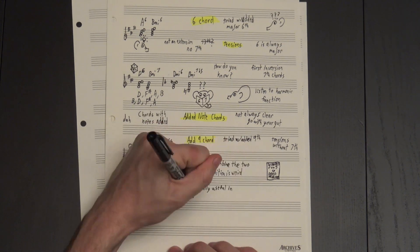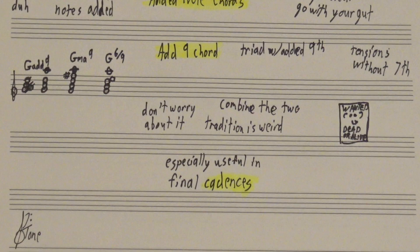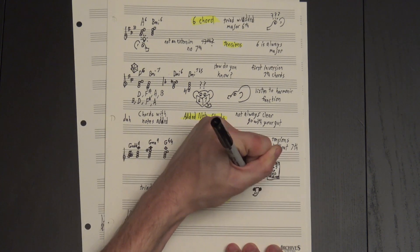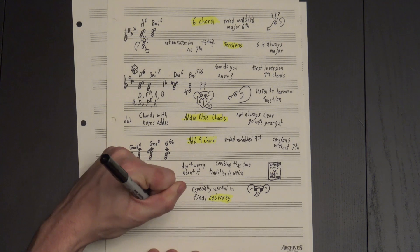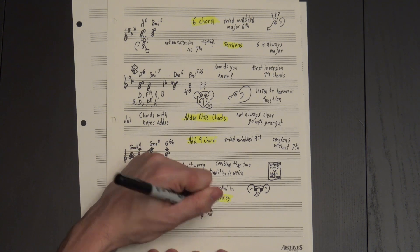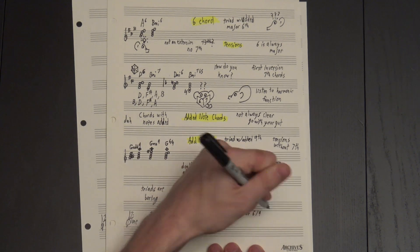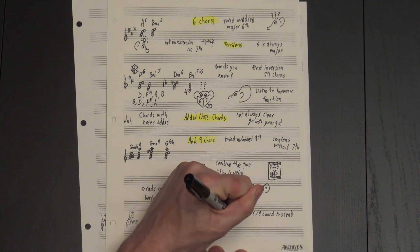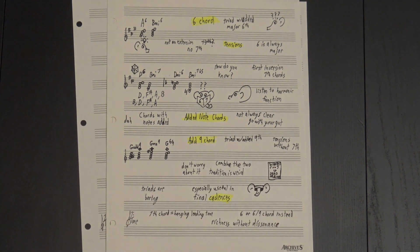This is especially useful in final cadences and harmonically complex progressions. You don't want to resolve back to a basic triad after all the cool stuff you've been doing, but ending on a major 7th chord leaves you with a hanging leading tone. Resolving to a 6 or 6/9 chord instead avoids that problem and gives you a rich, complicated chord with no real dissonance.